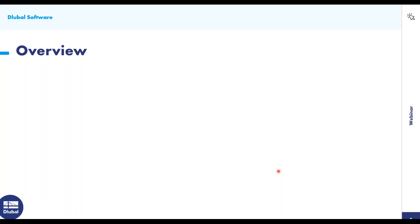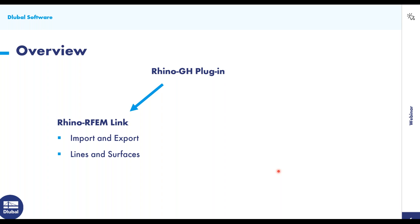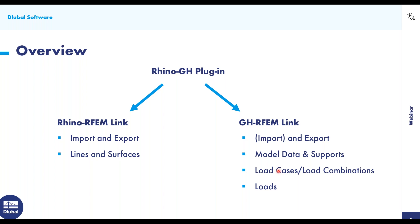Now let's go over a rough overview of the plugin itself. The Rhino/Grasshopper plugin is actually made up of two plugins. The first is the Rhino RFEM link, which is pretty similar to the past — with this link you have options to import, export, and transfer simple geometry like lines and surfaces. Materials and sections are not included with this transfer. The other link is the Grasshopper RFEM link, which has more changes.